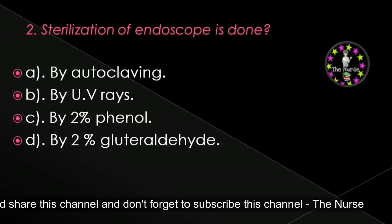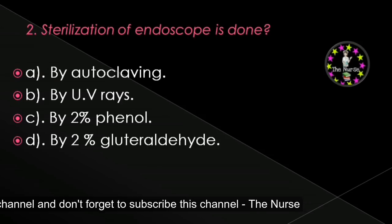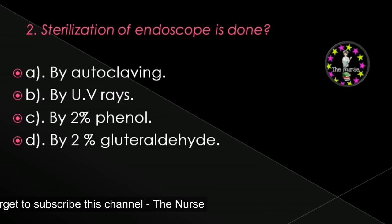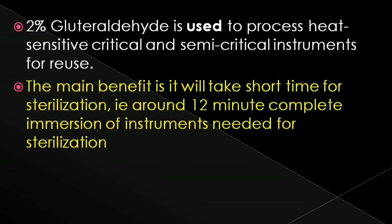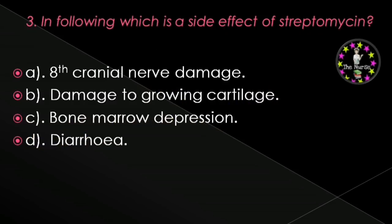Next question: Sterilization of endoscopy is done by — autoclaving, ultraviolet, 2% phenol, or 2% glutaraldehyde? Correct answer is 2% glutaraldehyde. It is used to process heat-sensitive critical and semi-critical instruments for reuse. The main benefit is it takes a minimum short time for sterilization, around 12 minutes. Complete immersion of instruments is needed.